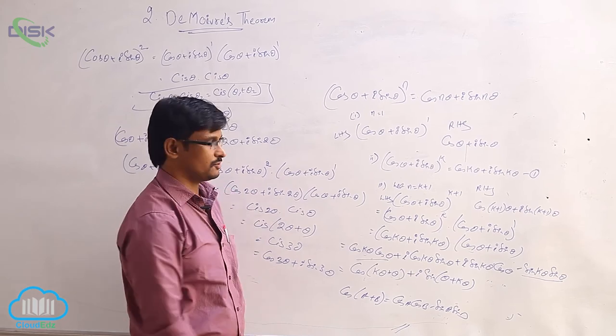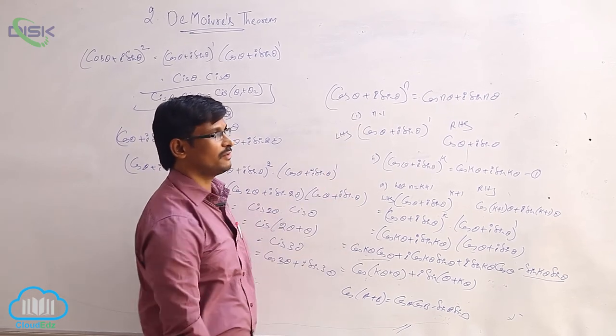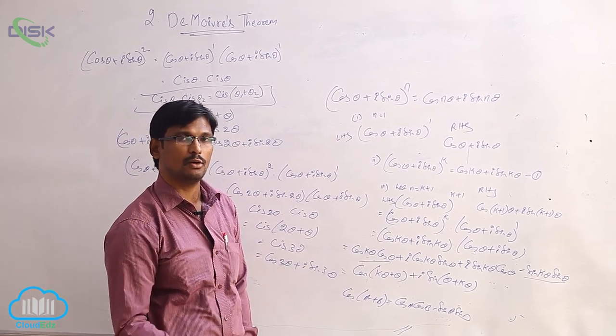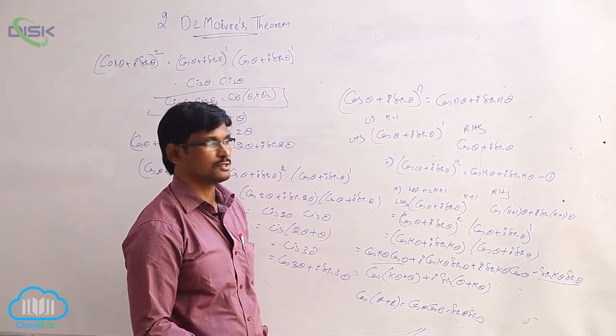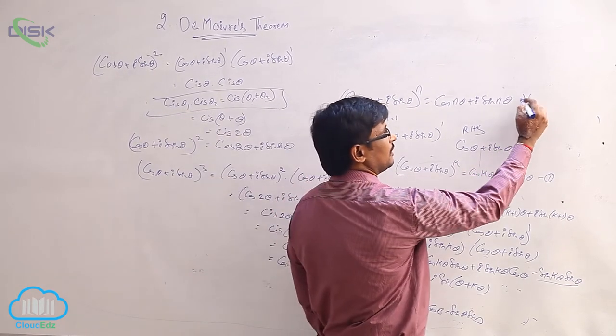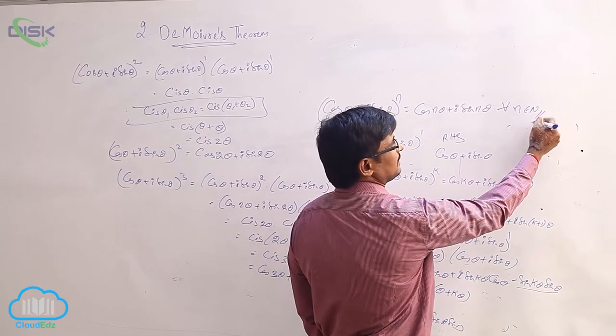So this satisfies for n equal to 1, n equal to k, and n equal to k plus 1. Therefore De Moivre's theorem is true for all n belonging to natural numbers.